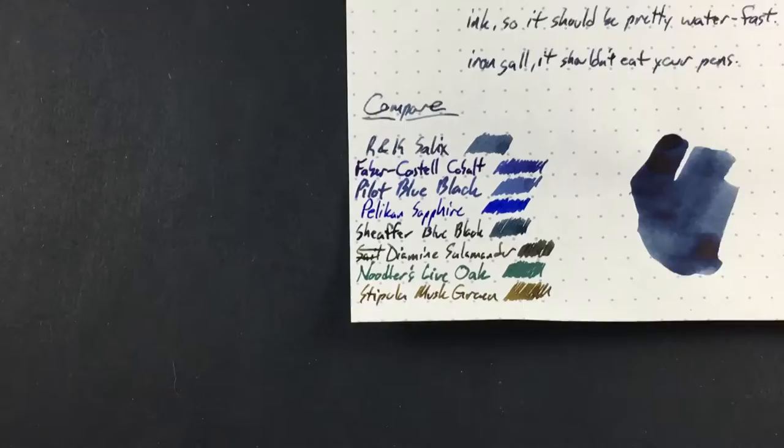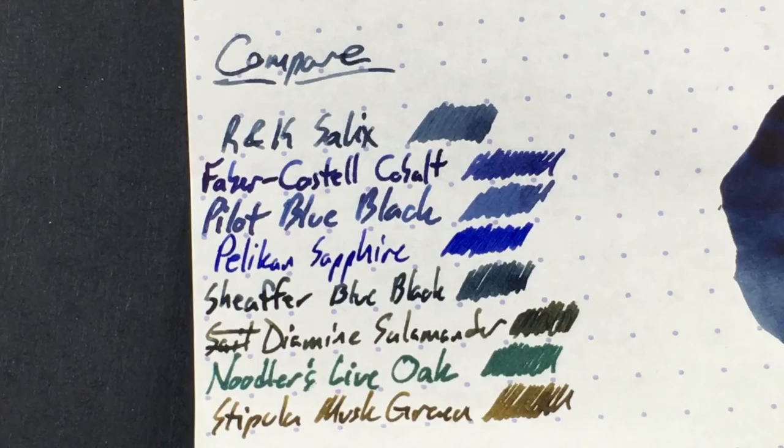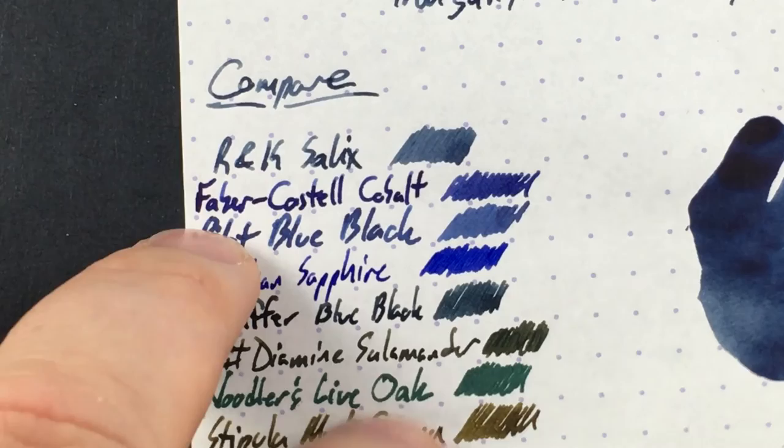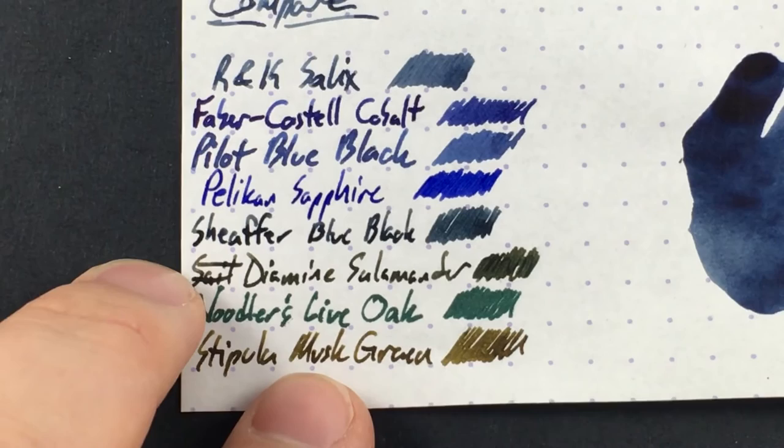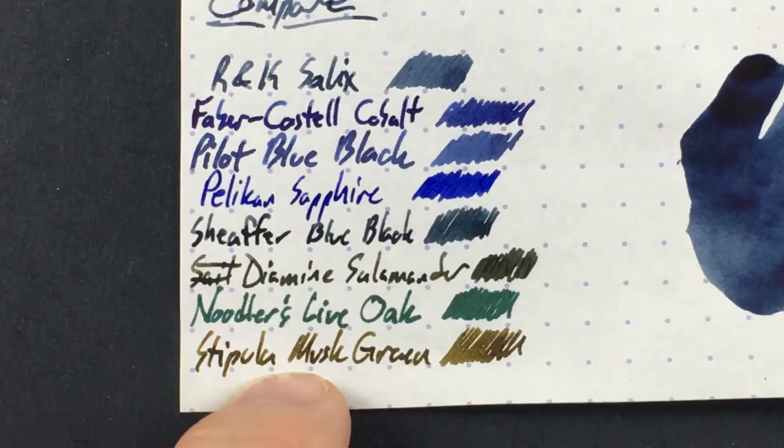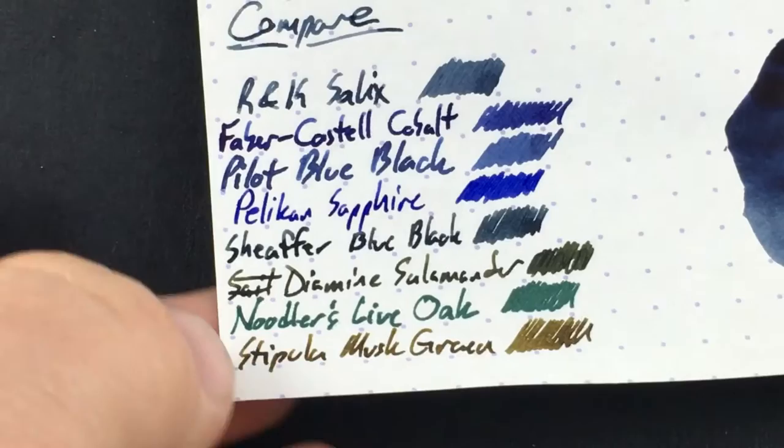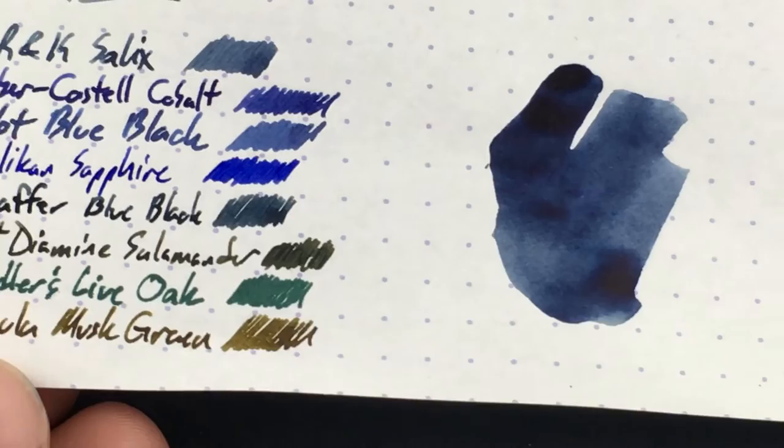Here it is next to a whole bunch of other inks of the blue variety. You can see about when I actually wrote this review if you go back and look at the reviews of these things. Some of these I haven't used in quite a while, so this is a nice little look back. Pilot Blue Black is a really nice blue black ink actually as well. I kind of forgot I have that. I have a bottle of it. I might have to try that out again. Faber Castell Cobalt is cool. Pelican Sapphire. I don't remember if I actually ever reviewed that one. I should check that out. Shafer Blue Black, which I totally forgot I had. Man, this is a walk down memory lane. Diamine Salamander, which is one of my favorite dark greens. Live Oak, which didn't work out too well. And Stipula Musk Green, which I think is very cool and kind of often overlooked. It's like a tamer, greener version maybe of R&K's Alt Goldgrund, which people like a lot.